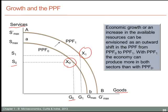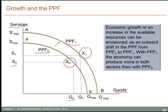To summarize, economic growth or an increase in available resources can be portrayed as an outward shift in the production possibility frontier from its original location PPF0 to its new location PPF1. With the new production possibility frontier, the economy can clearly produce more in both sectors than it could with the original production possibility frontier.